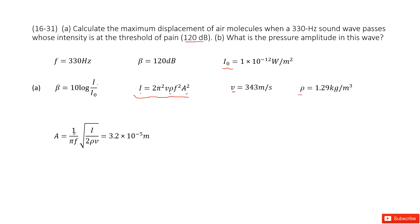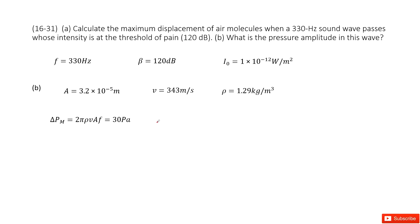Solving the equation, we get A = (1 / πf) times the square root of I over (2ρV). We need to find I first using the decibel formula, then input it into this expression to get the final answer.